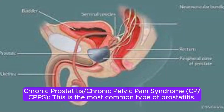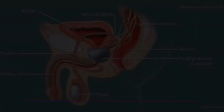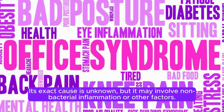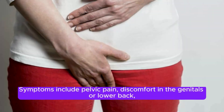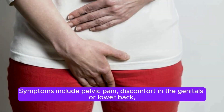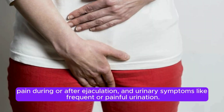Chronic prostatitis or chronic pelvic pain syndrome (CPPS). This is the most common type of prostatitis. Its exact cause is unknown, but it may involve non-bacterial inflammation or other factors. Symptoms include pelvic pain, discomfort in the genitals or lower back, pain during or after ejaculation, and urinary symptoms like frequent or painful urination.